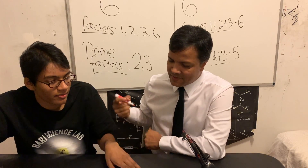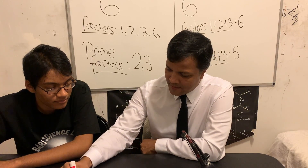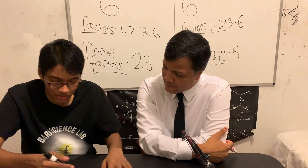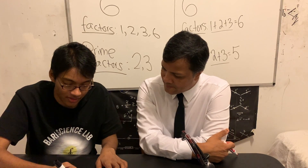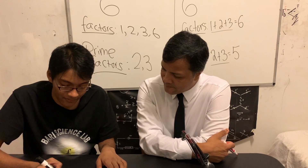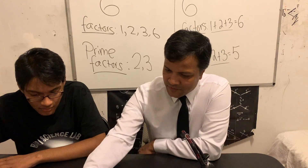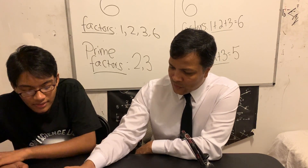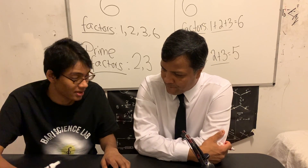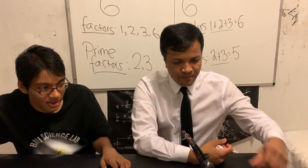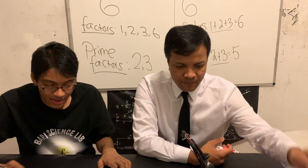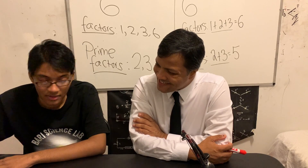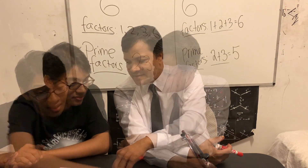They are prime. Why is seventeen prime? Because it has only two factors: one and itself. Why is four not prime? Let's check: one is a factor, two is a factor of four, and four itself is a factor — so three factors, not two. Four is disqualified from being a prime number.